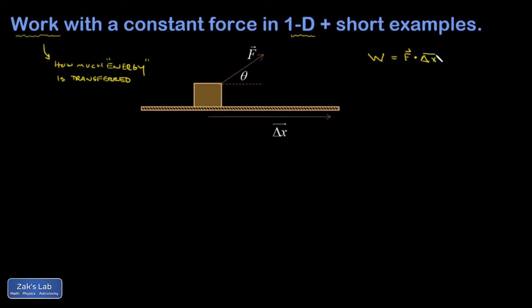This dot product means you take the magnitude of the first vector multiplied by the magnitude of the second vector multiplied by the cosine of the angle between them. An interpretation of that is that only the part of the force pointing in the direction of displacement actually counts - that piece is F cosine theta.